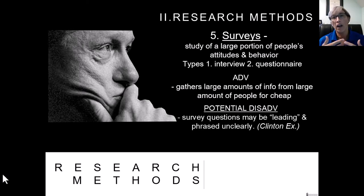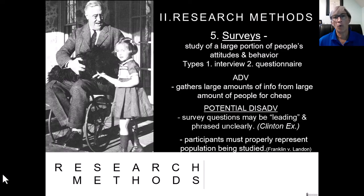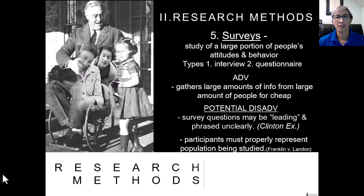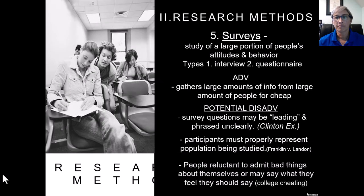We can't draw adequate and accurate conclusions based on flawed survey data. There was a survey sent out by Reader's Digest around the time of Franklin Roosevelt in 1932 that was very flawed — I'll tell that story in class tomorrow. People are also reluctant to admit bad things when taking surveys, so they may not tell the truth.